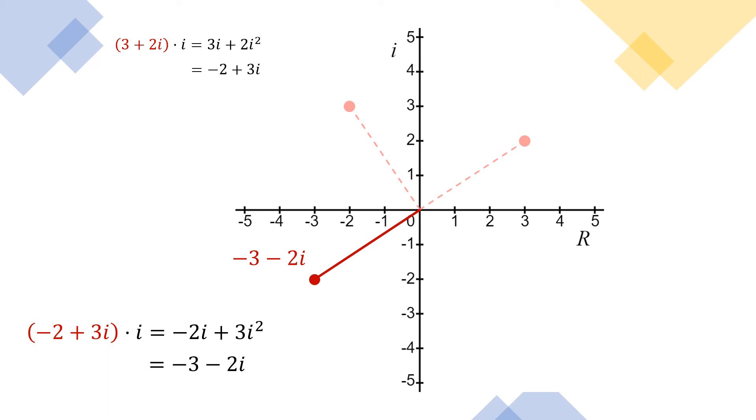Okay, so we're at negative three minus two i. So let's multiply that by i. And we get negative three i minus two i squared, which when we simplify that gives us two minus three i. Looks like that'll be in the fourth quadrant. And yet another 90 degree counterclockwise rotation.